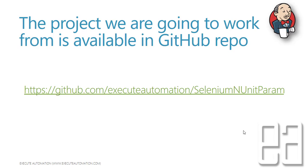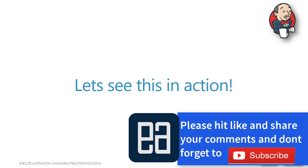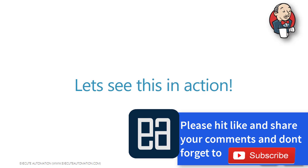The project we are going to work with from this video onwards is available in a GitHub repo at github.com/executeautomation/selenium-nunit-param. This is a project that showcases how you can run your Selenium tests by parameterizing values passed from a console command line, which can spin up the tests based on the parameter passed. It's already available on the executeautomation channel, so you can watch that video for a clear understanding of how the project is built.